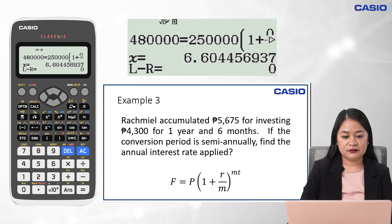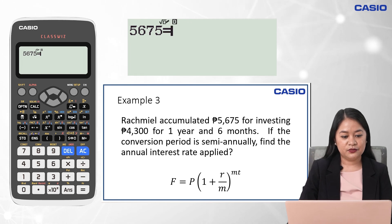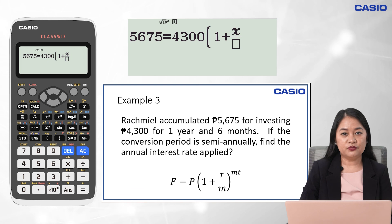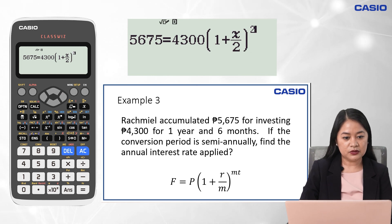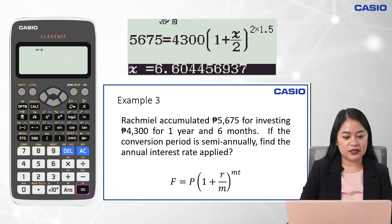So to compute for this, we input 5,675, press alpha, calc, 4,300, open parenthesis, 1 plus, for the rate, we will represent that by x. Fraction key, for the conversion period, since this is semi-annual, so the value is 2. Right arrow key, close parenthesis. Exponent key, 2 multiplied by the time, 1.5 years. So given this equation, we press shift, calc, and then equal sign.